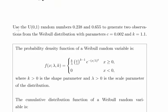In this presentation we're going to look at generating random numbers. In this particular case, we're going to use the uniform distribution and use two realizations from the uniform distribution to generate two observations from the Weibull distribution with parameters c equals 0.002 and k equal to 1.1.